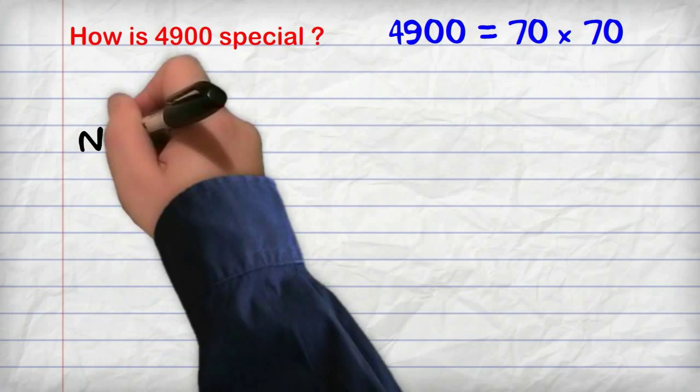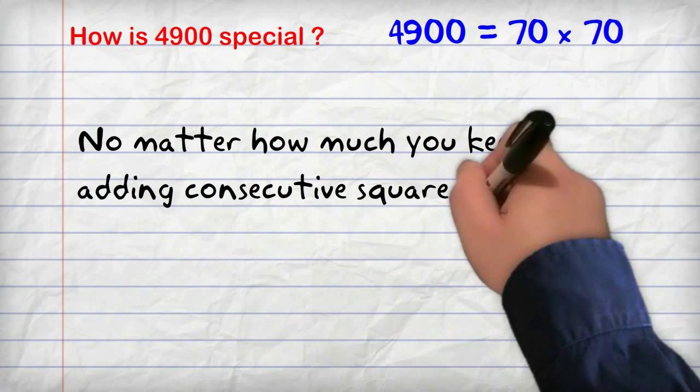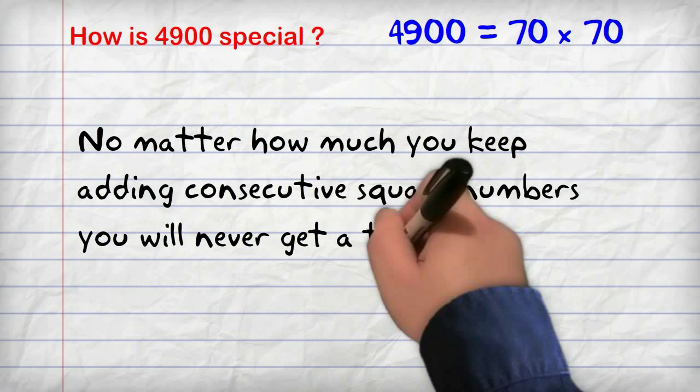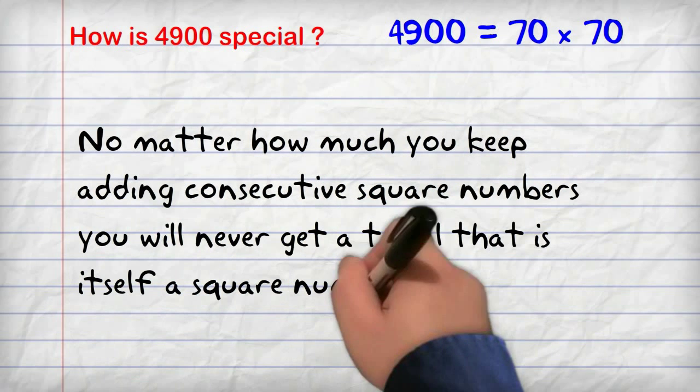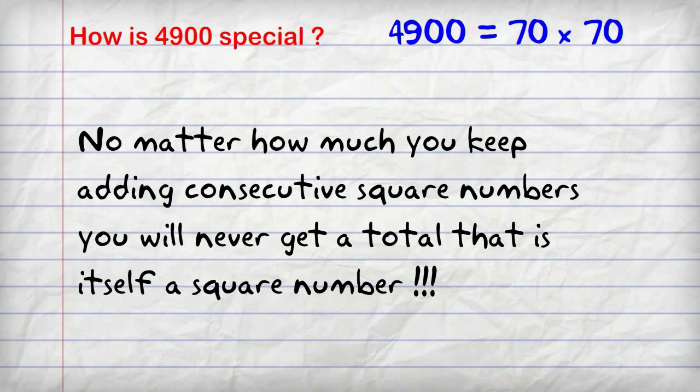No matter how much you keep adding consecutive square numbers, you will never get another total that is itself a square number. I hope you've enjoyed seeing how 4,900 is special.